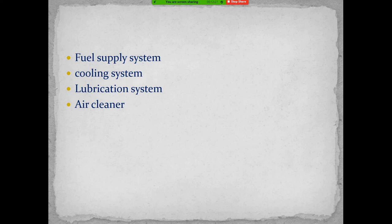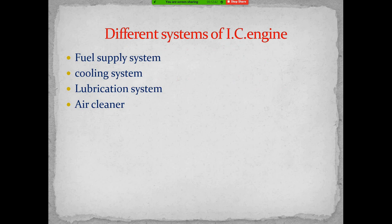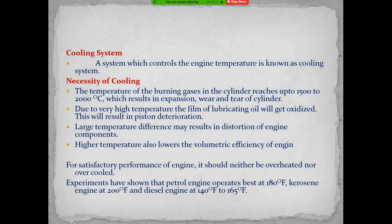Today's topic is the different systems of the engine: the fuel supply system, cooling system, lubrication system, and air cleaning system. These are the different systems of the IC engine — fuel supply system, cooling system, lubrication system, and air cleaner. What do you mean by the cooling system?